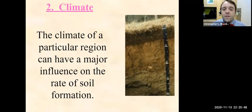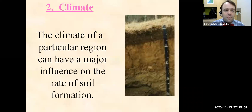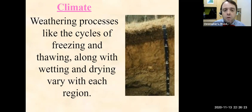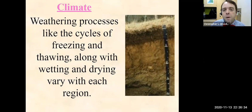The next big influencing factor is climate. The climate of a particular region can have a huge influence on the rate of soil formation and the type of soil. Think about a tundra — soil that's frozen year-round — versus a tropical region that doesn't really have seasons and is warm year-round, versus a deciduous forest. Those cycles of freezing and thawing, the wetting and drying, all vary by climate and have a huge impact on how soils form.